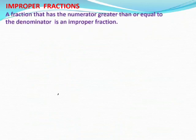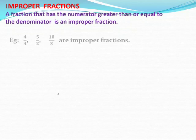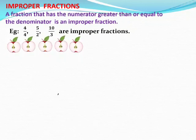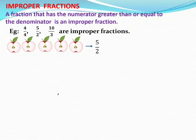Now let us see what are improper fractions. A fraction that has the numerator greater than or equal to the denominator is an improper fraction. Let us see an example. Here you can see that each piece is half of an apple. Suppose there are 5 members in your family, and each person ate half of an apple. To show the fraction for 5 halves, we write it as 5 by 2. That means 5 shows the number of parts eaten, and 2, the denominator, is the number of equal parts each apple is divided into. So the denominator is 2.